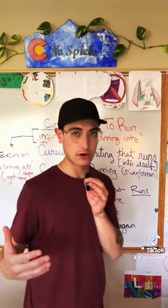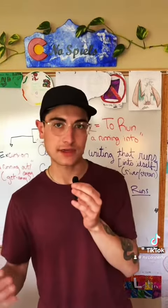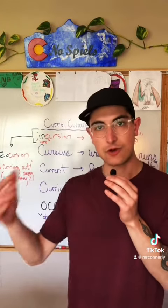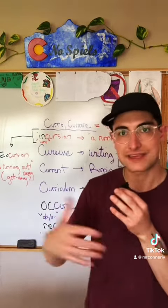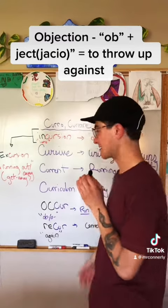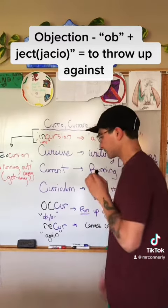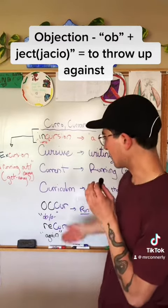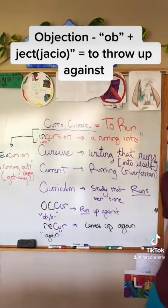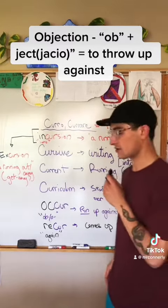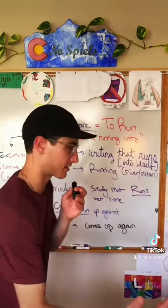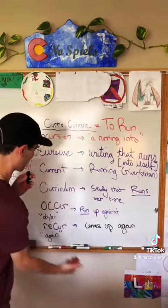'Occur' — that OC is actually a prefix that can be derived from 'ob,' which means against. When you are objecting to something, you are against that. So 'occur' would be to run up against. When something occurs, you run up against something essentially.